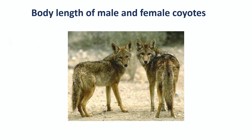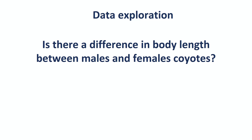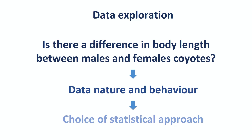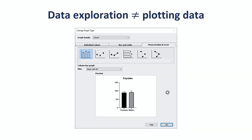Let's try an example. We are going to look at the body lengths of coyotes. Let's say we have collected data and we want to know if there is a difference between males and females. Before thinking about stats, our first job is to explore our data, because our choice of statistical approach will be driven by the question we are asking, the nature of our data, and by their behavior. So data exploration is totally pivotal. By default, PRISM 8 will suggest a bar chart as a first graphical approach, but it is the last one we want when it comes to data exploration and data presentation.